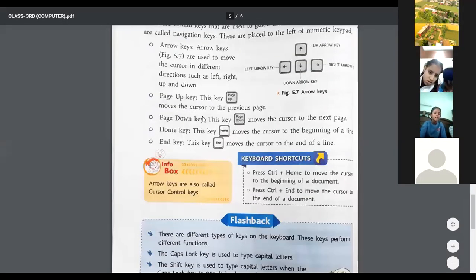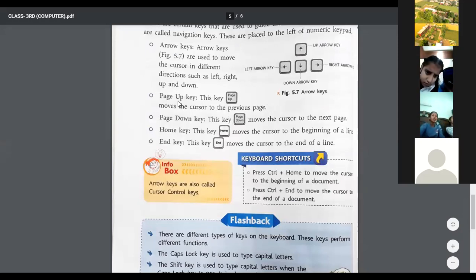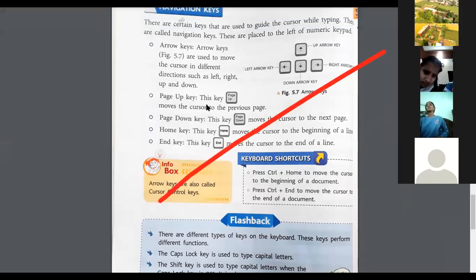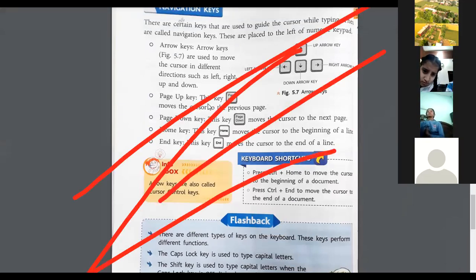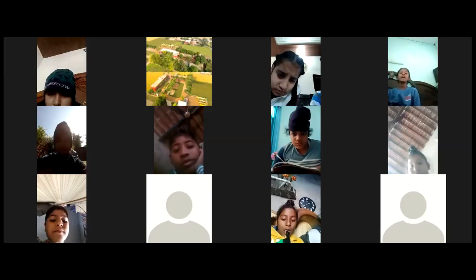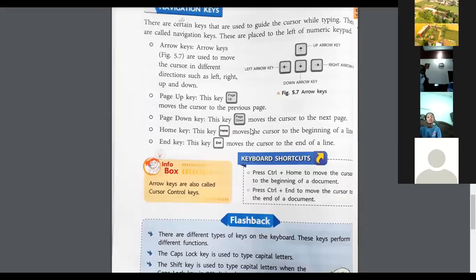The Page Up key moves the cursor to the previous page. If you want to go to the previous page, use the Page Up key. The Page Down key moves the cursor to the next page. If you want to go to the next page, use the Page Down key.